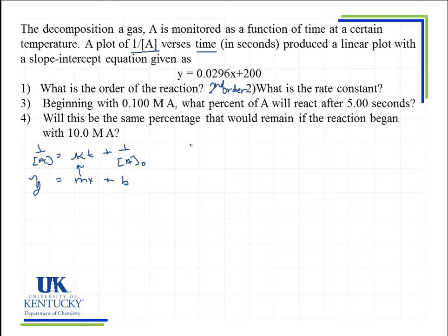It also tells me that K is equal to the slope, so it's 0.0296. Let me draw that out over here where I've got a little bit more room. We've got along the Y axis 1 over concentration, along the X axis time. It has a straight line for its graph. The slope of this line is equal to 0.0296, and let's get units for that.